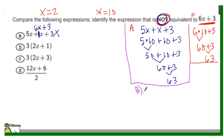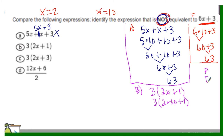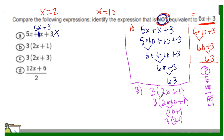Now let's check option B. Option B says 3 times the sum of 2 times x and 1. Substituting 10 for x: 3 times open parentheses 2 times 10 plus 1 close parentheses. Order of operations says evaluate parentheses first. Inside the parentheses, 2 times 10 is 20, and 20 plus 1 is 21. That gives us 3 times 21. Remember, parentheses means multiplication, so keep those parentheses or add a multiplication sign.